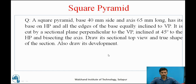Now let us take one example on a square pyramid. The question is: a square pyramid having base 40 mm and axis height 65 mm, which rests on HP and all the edges of the base are equally inclined to VP. It is cut by a sectional plane perpendicular to VP, inclined at 45 degrees to the horizontal plane, and bisecting the axis. Draw its sectional top view, true shape of the section, and also draw its development.